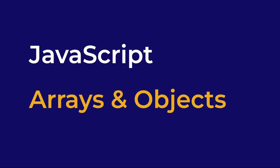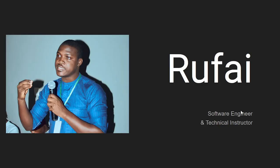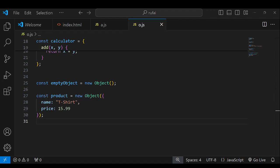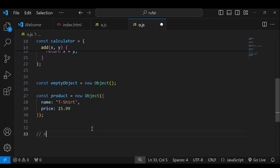In this section we will be discussing arrays and objects in JavaScript. My name is Mosu Rufai and I will be walking you through these JavaScript concepts. Arrays and objects are what we refer to as data structures in JavaScript. The primary function of these data structures is to hold data and to keep data for you — to manage data and to hold them until you need them.